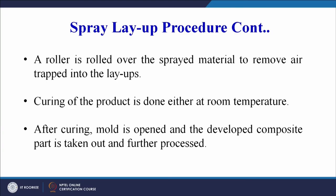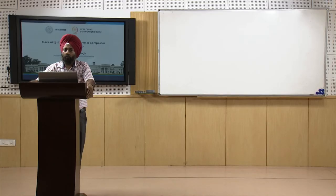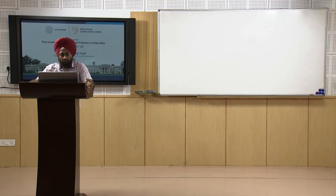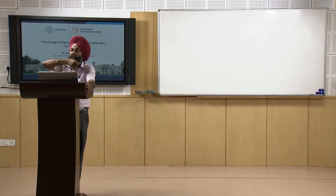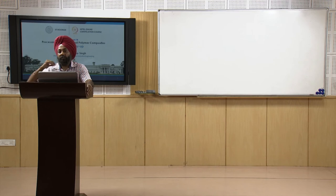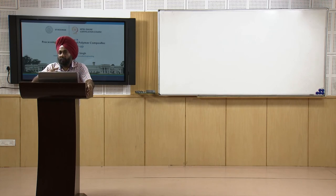Curing of the product is done either at room temperature or at higher temperature, depending on the processing cycle designed for that product. For high productivity we may go for autoclave curing; when time is not a constraint, room temperature curing is also possible. After curing, the mold is opened and the developed composite part is taken out and further processed.